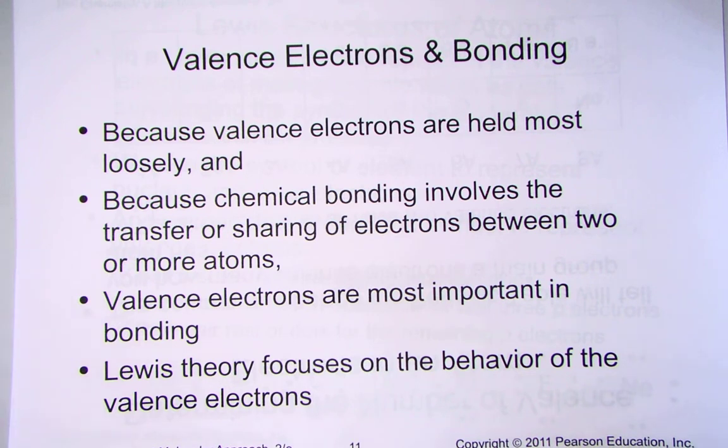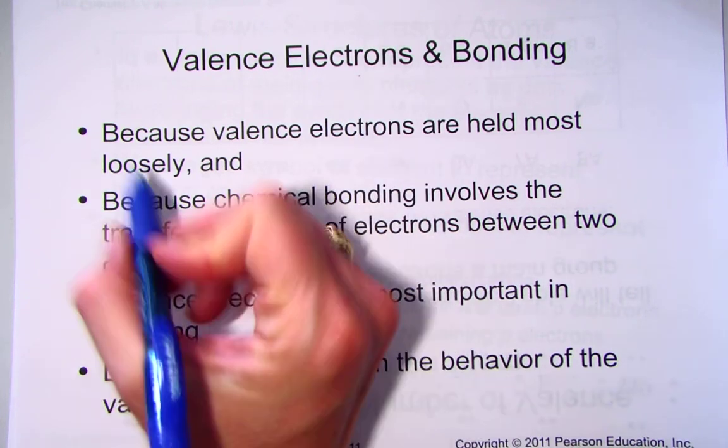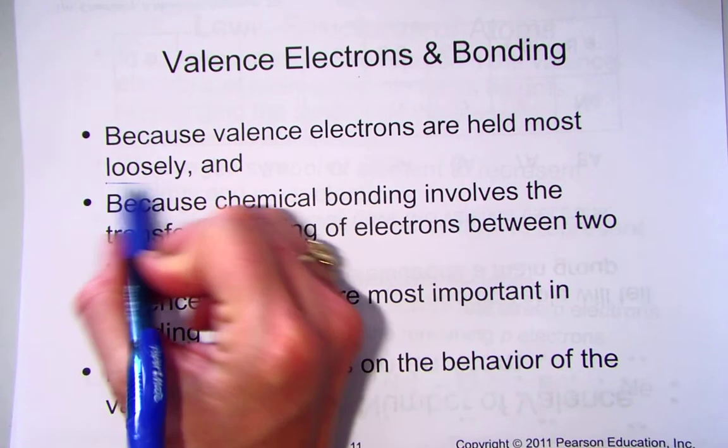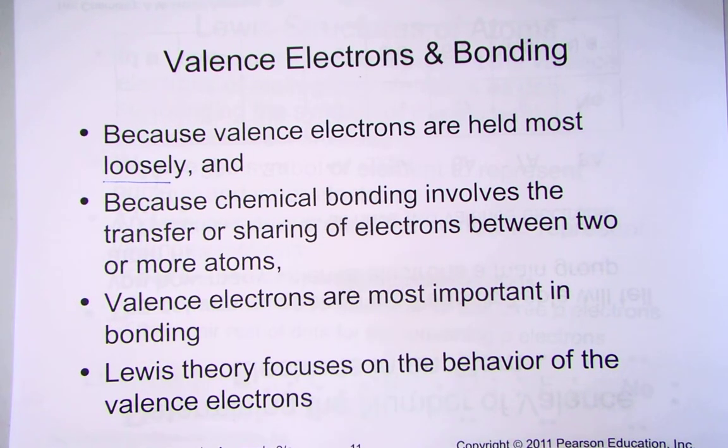When we refer to valence electrons, we refer to those as the ones being held in the outermost energy level. And the further away they are from the nucleus, they are held the most loosely, easily lost electrons, the further they are away from that core positive nucleus.